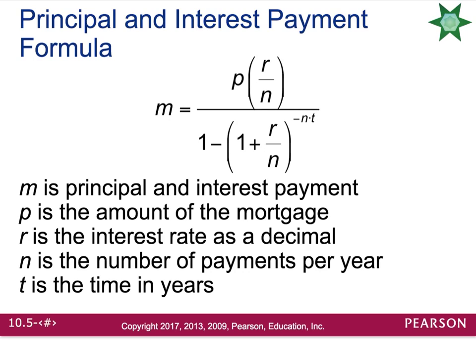There is a formula to calculate the principal and interest payment, which we call M. To calculate this, you take the amount of the mortgage multiplied by the interest rate as a decimal divided by the number of payments per year — this is the numerator. In the denominator, you do 1 minus (1 plus the interest rate as a decimal divided by the number of payments per year) raised to the negative power of the number of compoundings per year times the number of years you plan to have the loan. It's very tedious to do by hand, so you have to enter it in your calculator carefully. I try to get my numerator first, my denominator second, and then do the division.